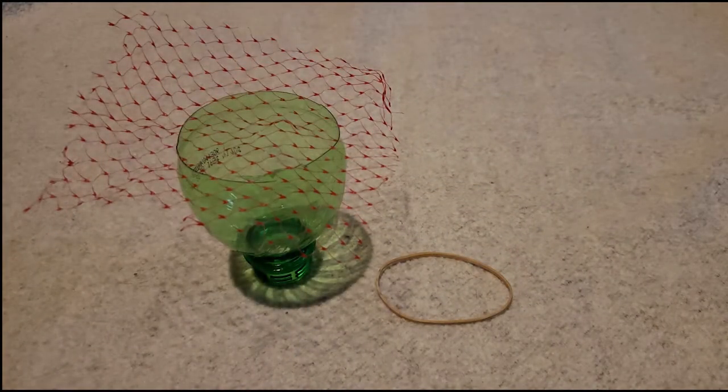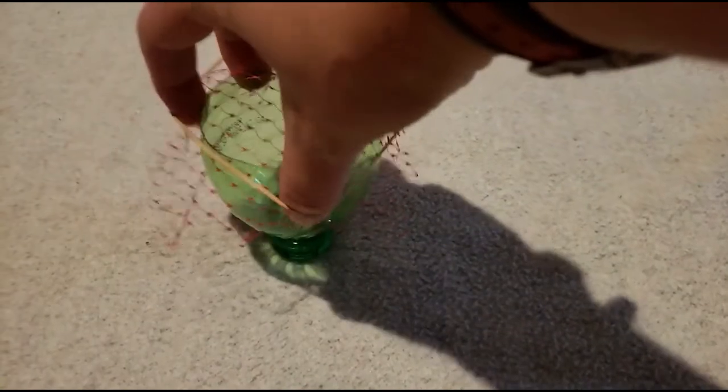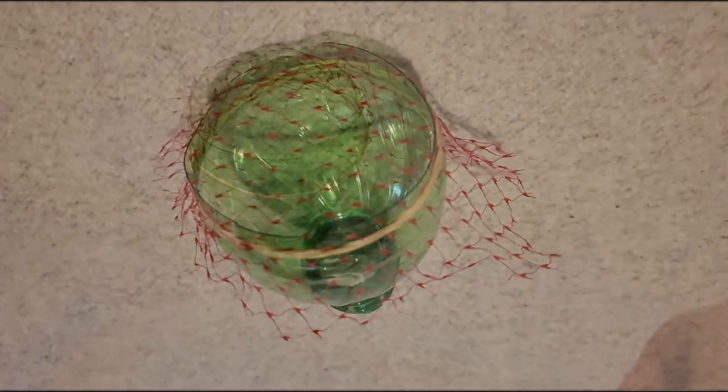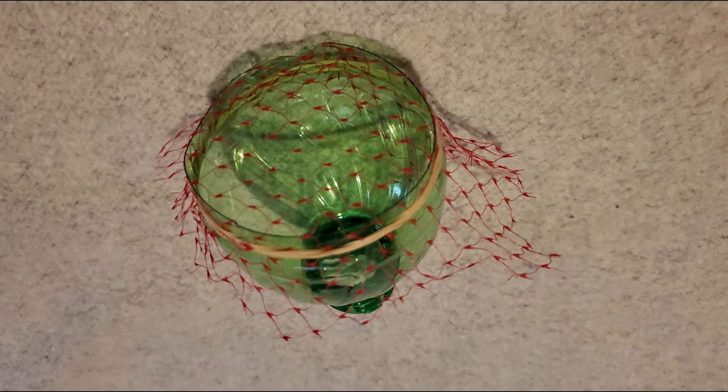So I'm just going to use a rubber band and band it in place like this and then this will be your part that's going to blow the bubbles. You'll blow into the top of the bottle and the bubbles will come out through the mesh.